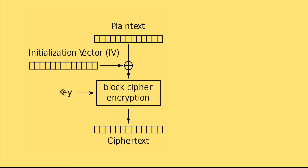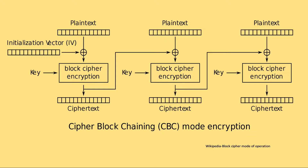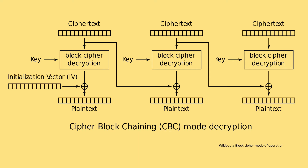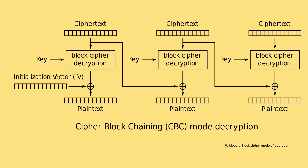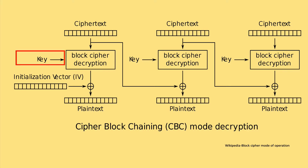The problem is solved with an initialization vector, which is a fixed-size input also 128 bits, to randomize the cipher text so that even for repeated words or phrases in your plain text the cipher text would be different. You only need one initialization vector because for subsequent blocks the cipher text from the previous block is used to randomize the plain text. This is how cipher block chaining works. CBC is a very common mode of operation. When you decrypt, the process will be reversed, and to decrypt the ciphertext you will need the ciphertext itself, the key, and the initialization vector.